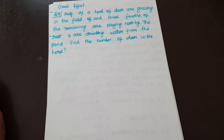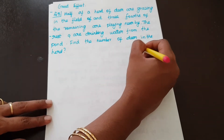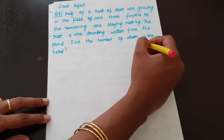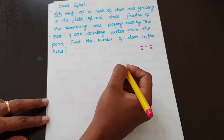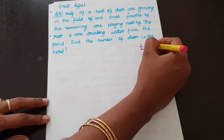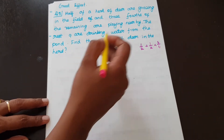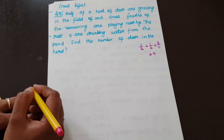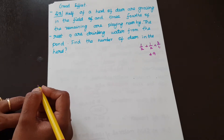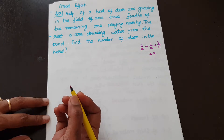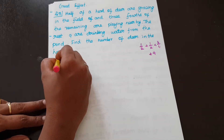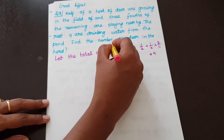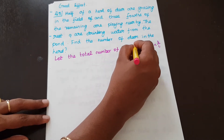Half of the deer are grazing. The other half — of that remaining half, three-fourths are playing nearby. We don't know the total number of deer, so let the total number of deer be X.